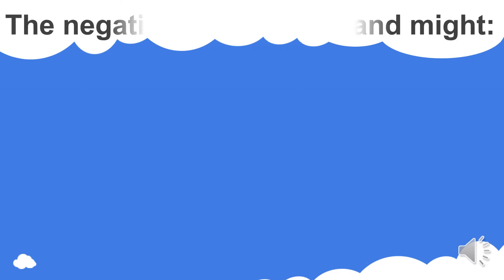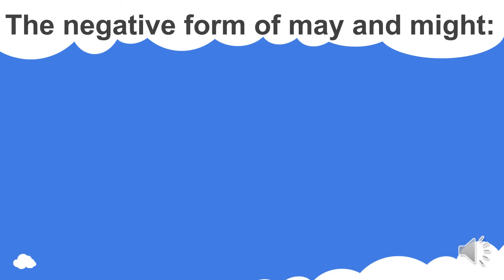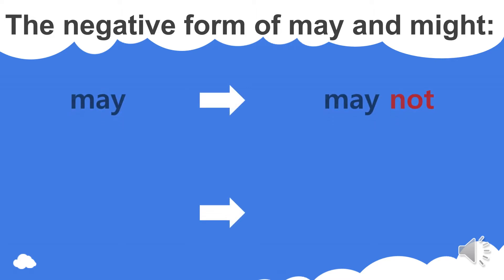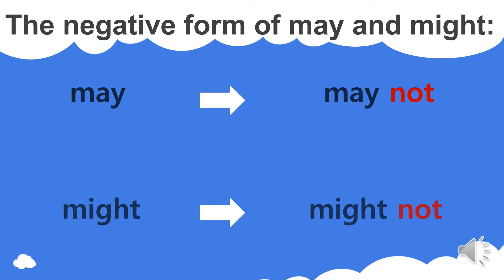Before we start, you need to know that the negative form of may and might — we just add 'not'. So may will be 'may not', and might will be 'might not'.